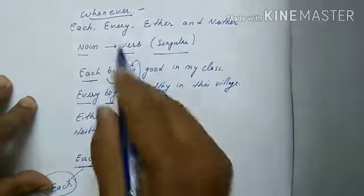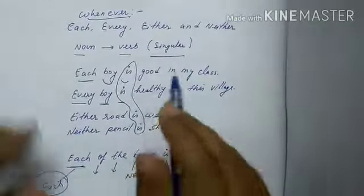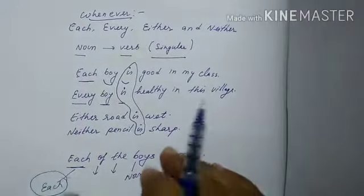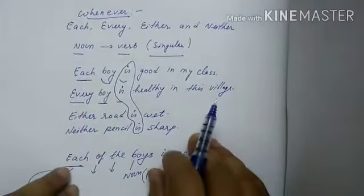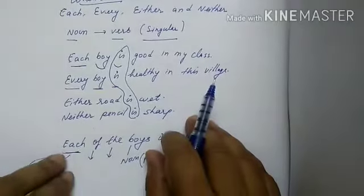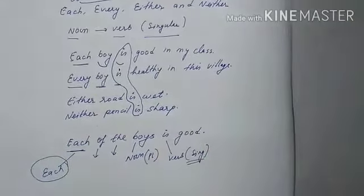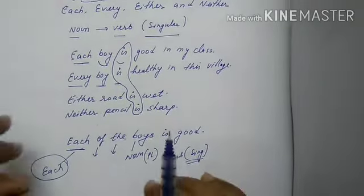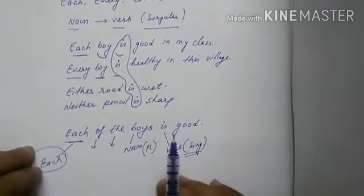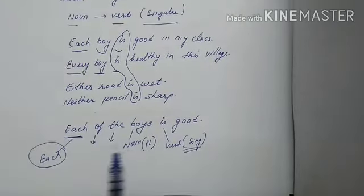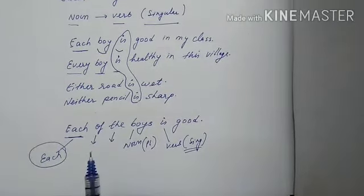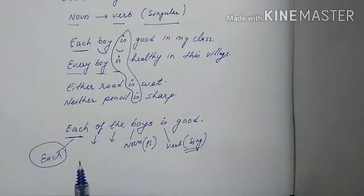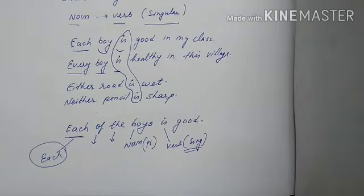Whenever each, every, either, and neither work as a subject, we must use a singular verb. And if 'of' is added after each, either, or neither, the noun will become plural but the verb will remain singular. Many questions in exams are based on this pattern.